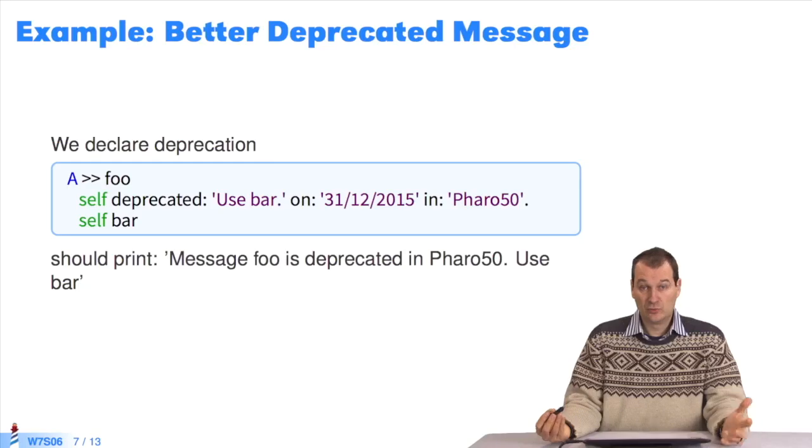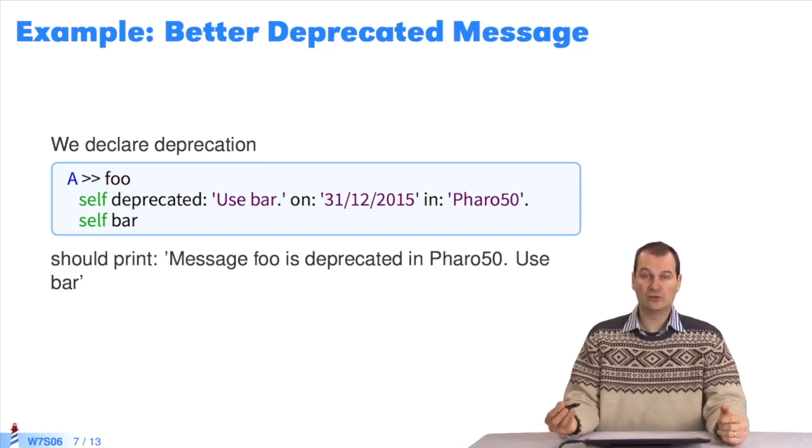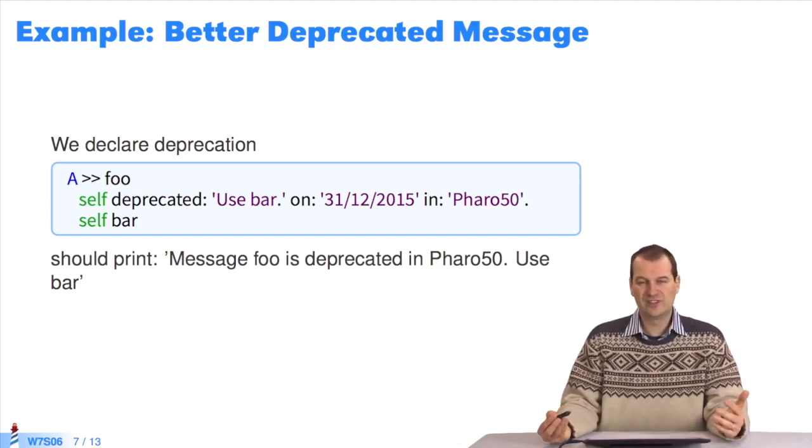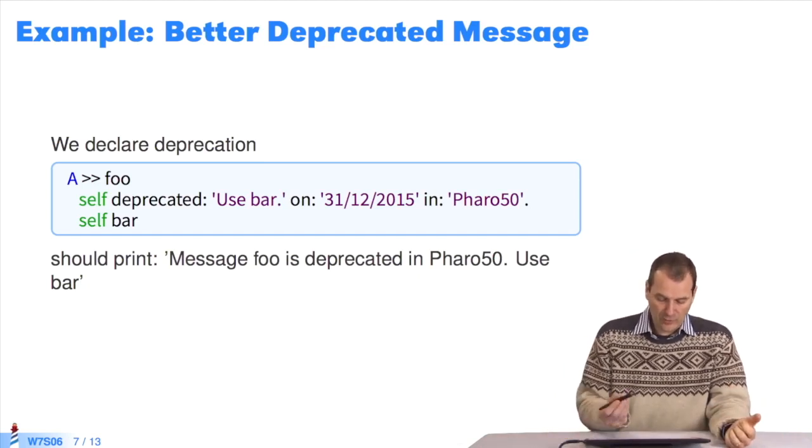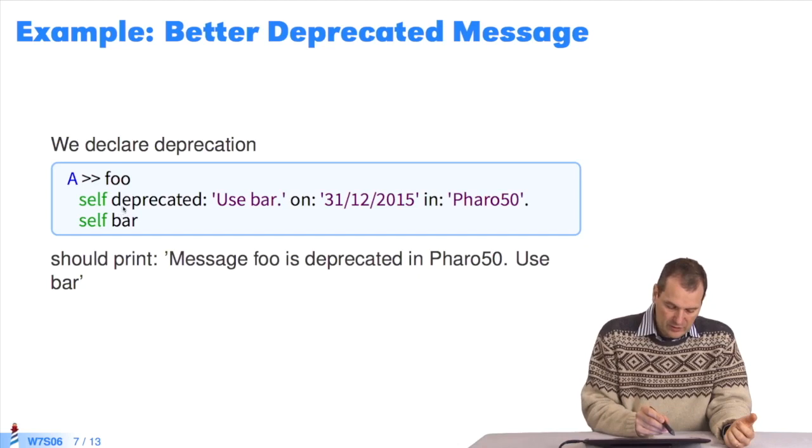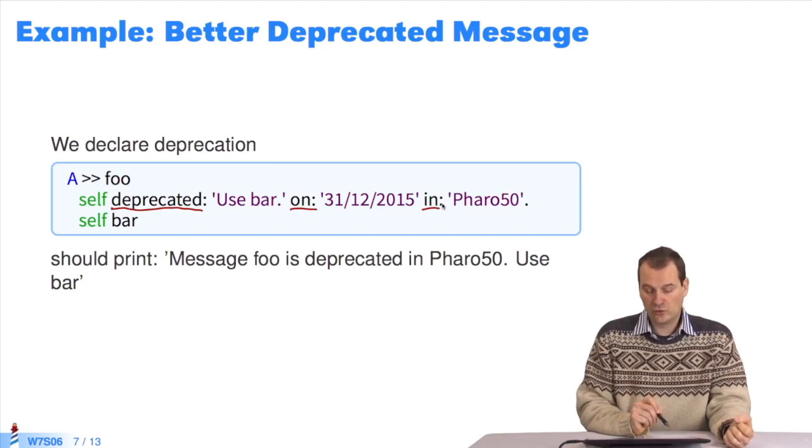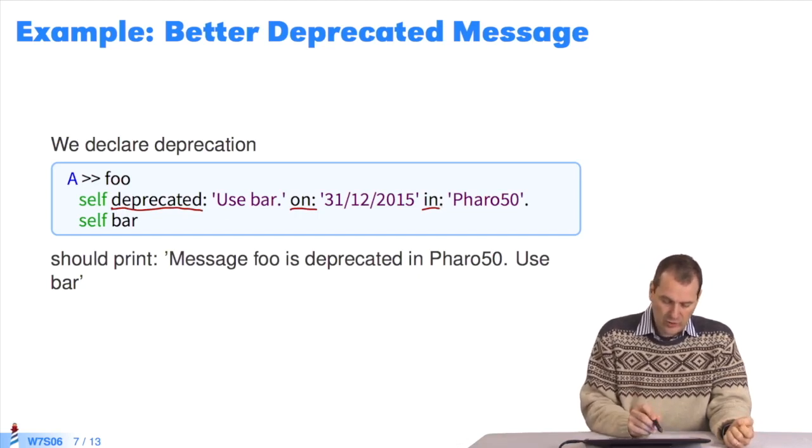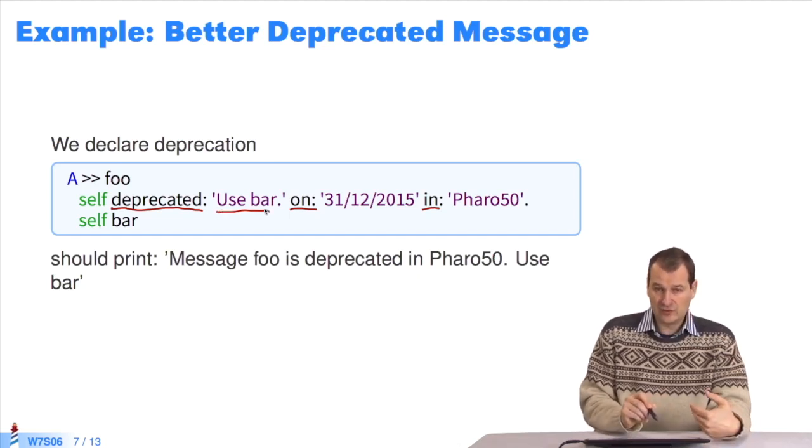Now I'll show you two examples of how we use thisContext. The first is deprecation, used when we want to change API. As a programmer, we edit the method and use the message deprecated with on and in, as I explained in the course on exceptions. Here, we want to express the message, use bar. And what will the deprecation display?